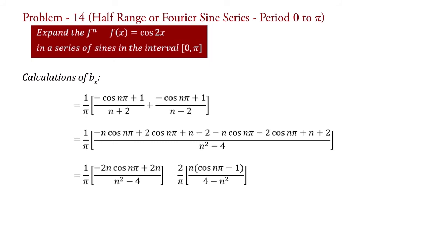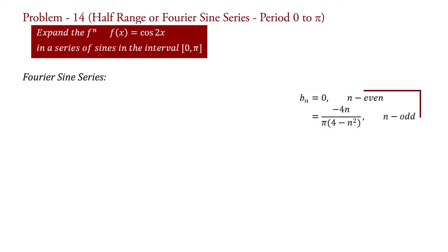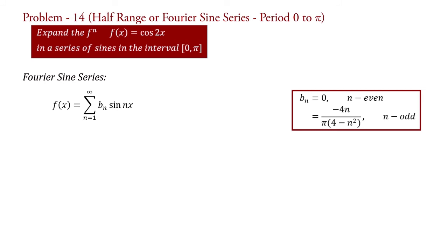Now, if n is even, then cos(nπ) = +1, and therefore cos(nπ) − 1 = 0, so b_n = 0 for even n. And if n is odd, then cos(nπ) = −1, therefore cos(nπ) − 1 = −2, and therefore b_n = −4n / [π(4 − n²)]. Substituting this value into the series equation, we have f(x) = summation over odd n of [−4n / (π(4 − n²))] sin(nx).